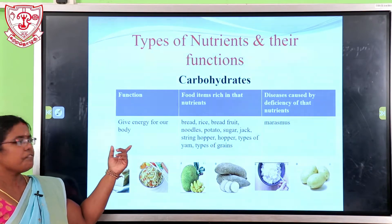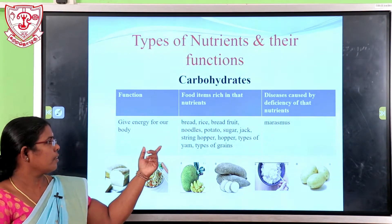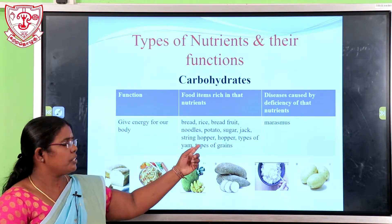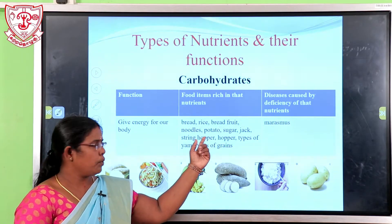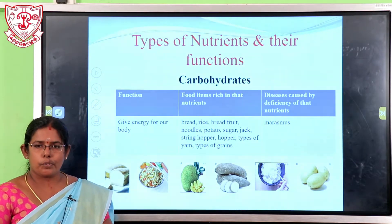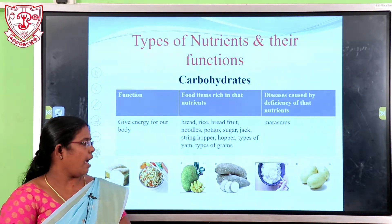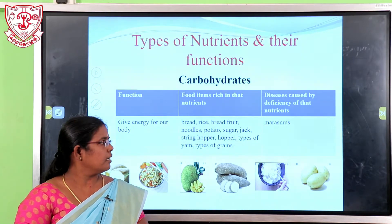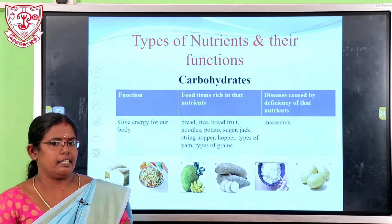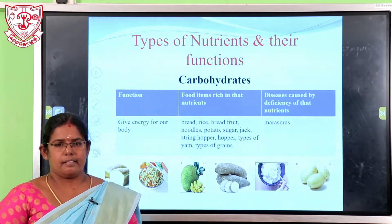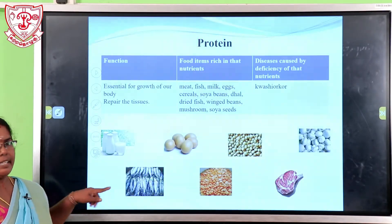The function of carbohydrate is to give energy to the body. Food items rich in carbohydrates include bread, rice, breadfruit, noodles, potato, sugar, jacks, hoppers, types of jacks, and types of grains. The disease caused by deficiency of carbohydrates is marasmus.